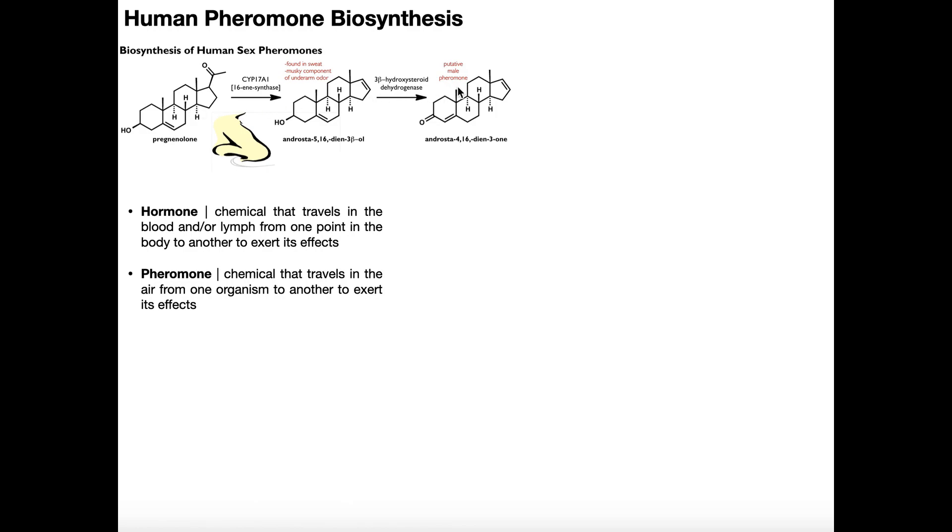Now, this sequence of reactions right here, these two reactions, this occurs really in two major locations. It occurs in the armpits, and it occurs in the genitals. Now, when I say the genitals, I mean either in the ovaries if you're female, or the testes if you're male. But this sequence of reactions also occurs in the axilla, the armpit.